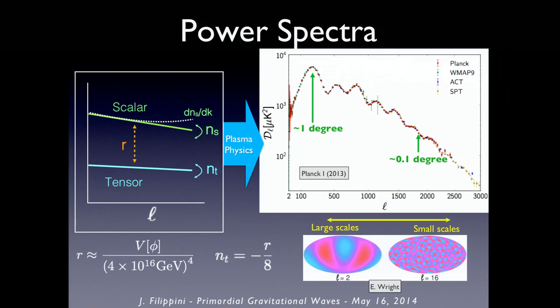The transfer function from whitish noise to this power spectrum tells you all about the plasma physics of the hot early universe. This is a plot of power in microkelvin squared as a function of angular scale, with spherical harmonic L on the x-axis. On the left are large scales up to the full sky, and on the right are small scales down to arcminute scales. This is the kind of plot you'll be seeing a lot.